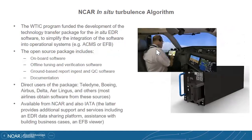The WITIC program funded the development of the technology transfer package. A lot of funding came from AWRP, but where WITIC really came in was this tech transfer package, designed to simplify integration of the software into an operational system. The open-source package includes the onboard software, offline tuning and verification software in MATLAB, ground-based report ingest and QC software, and documentation. Direct users of the package have been Teledyne, Boeing, Airbus, Delta, Aer Lingus, and others, though most airlines obtain their software from these sources rather than using the package directly.